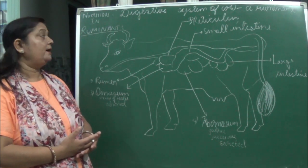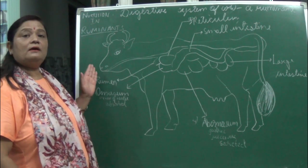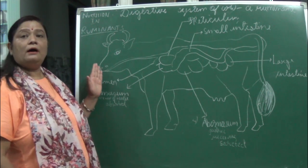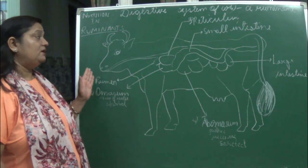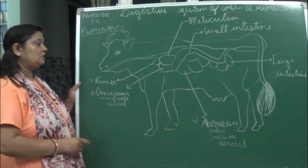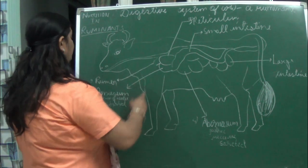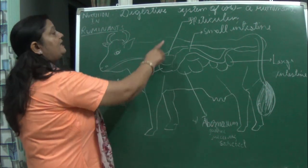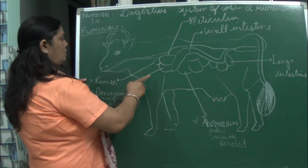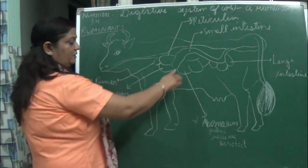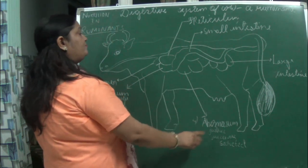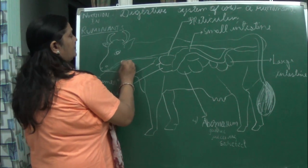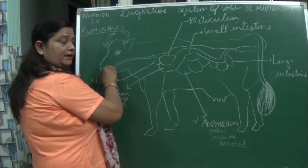Their movement of the mouth we see always. When they take the food — this grass — from the mouth, it reaches the stomach. The stomach has got different regions. The first region is the rumen, second is the reticulum, third is the omasum, and the fourth is the abomasum.